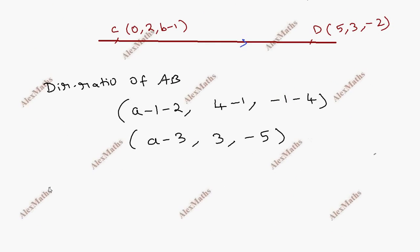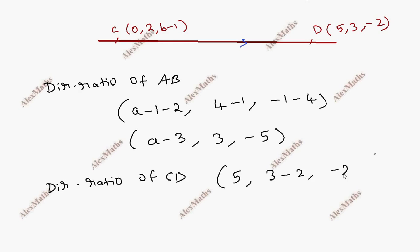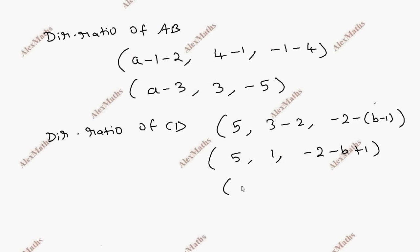Now for the direction ratio of line CD: D point minus C point gives (5 minus 0, 3 minus 2, minus 2 minus (b minus 1)), which simplifies to (5, 1, minus 1 minus b). So the direction ratio of CD is (5, 1, minus 1 minus b).